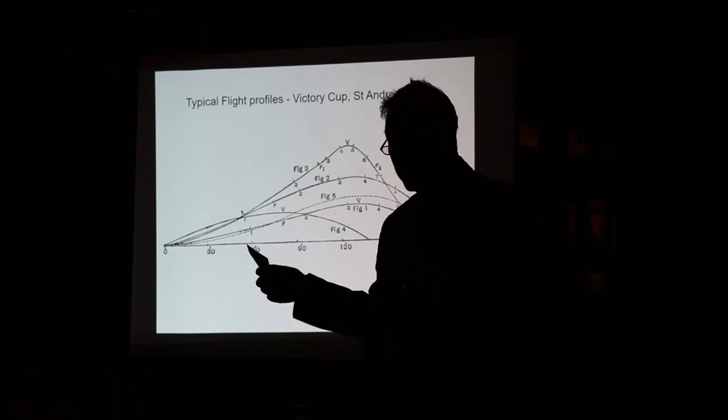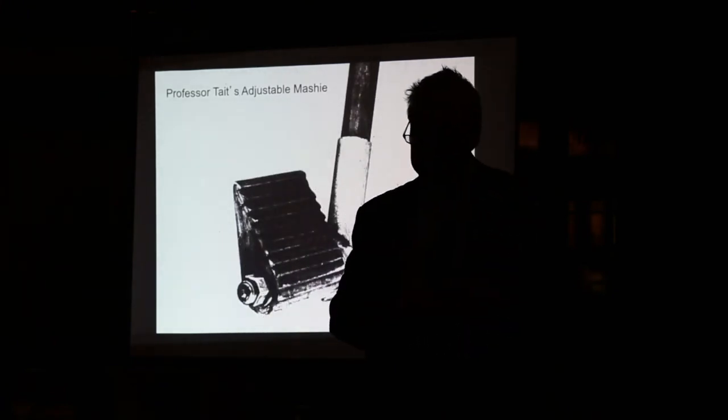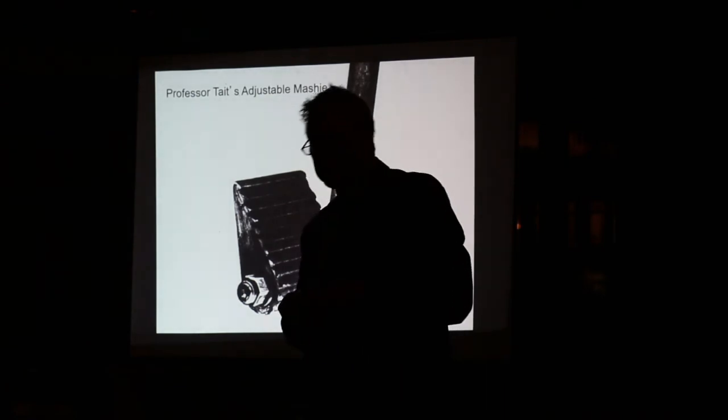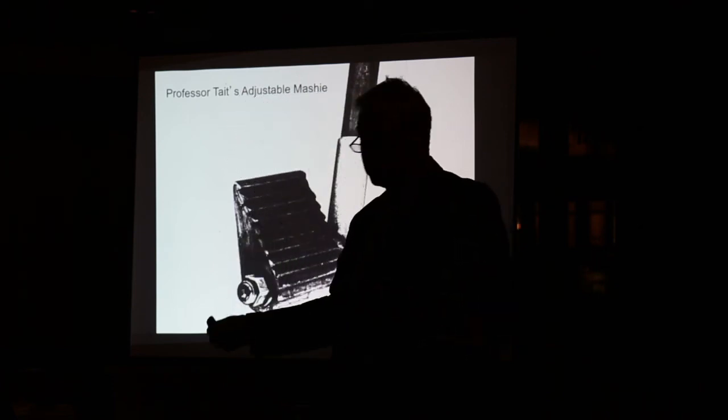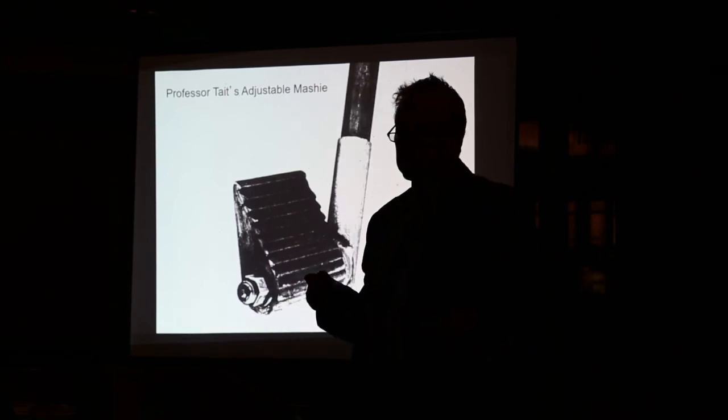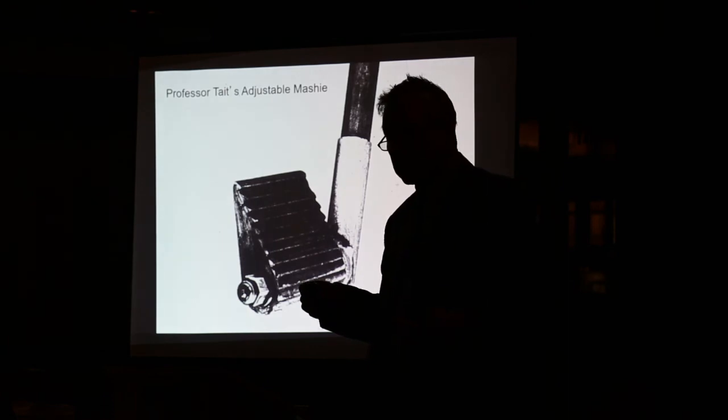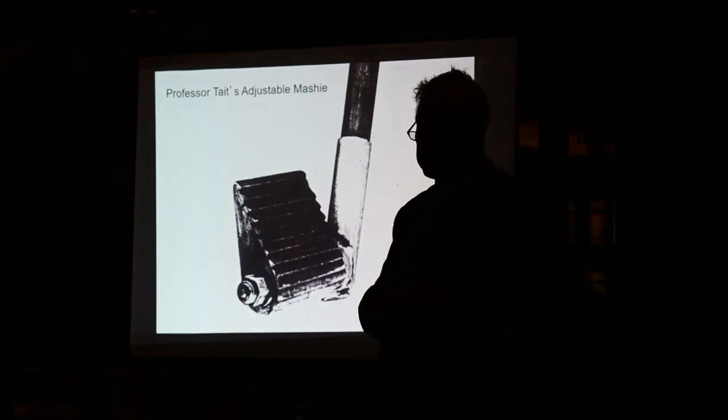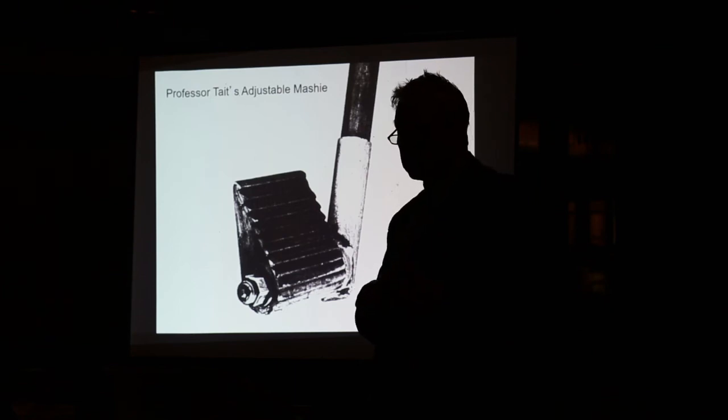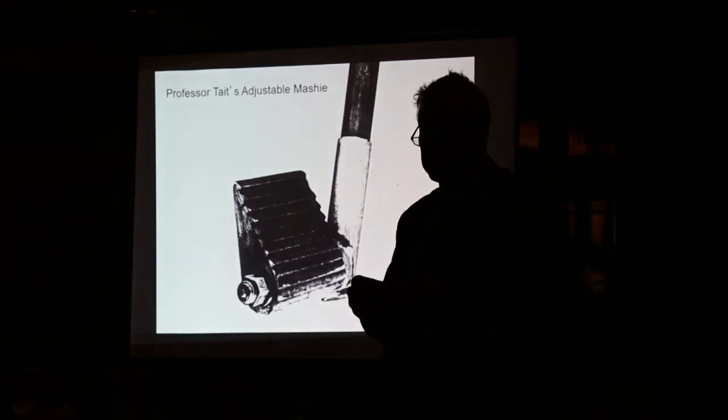He didn't just report into the Scotsman and the popular magazines. He wrote into the scientific press as well, so he had articles published in Nature and in the proceedings of his local Royal Society of Edinburgh. He had peer-reviewed articles in the scientific press as well. One of the immediate results of this was that he also tried to make his own club that would impart more spin and therefore give more length. I don't think that this particular club, which is an adjustable loft, was of sufficient balance or quality to hit the ball any better than an ordinary club, but it would certainly destroy the surface of any good balls. That club sits in the collection of the Royal Scottish Museum in Chambers Street.